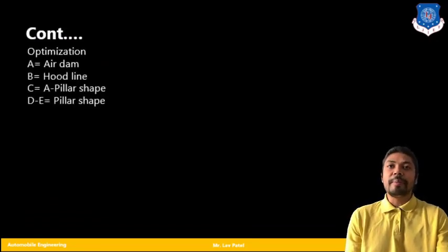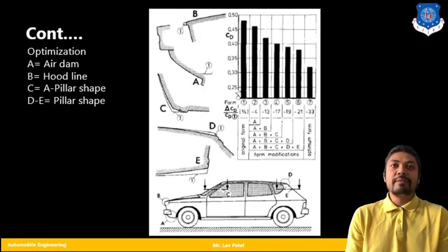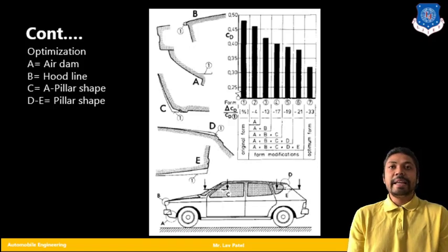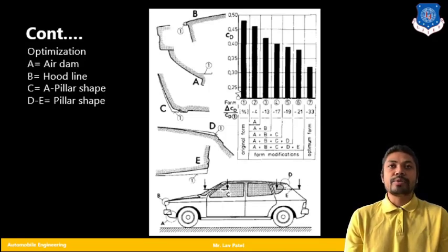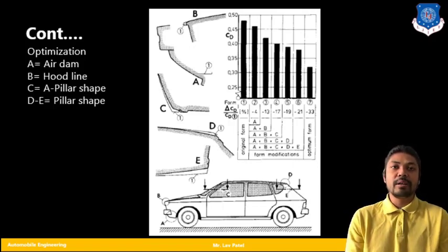Now if we are talking about optimization, one graph has been shown here in which we have several compartments or we can say the areas at which we are going to optimize the drag value. Point A is the air dam, B is the hood line, C is the A-pillar shape, D and E are also the other kind of pillar shapes. From the figure of the car you can see that different points A, B, C, D and E.